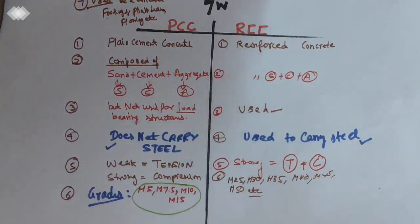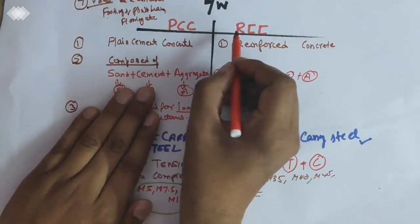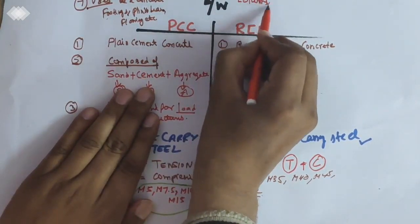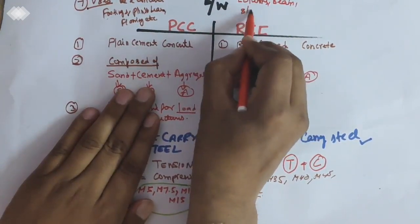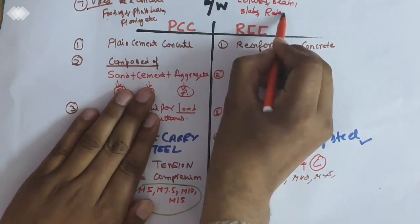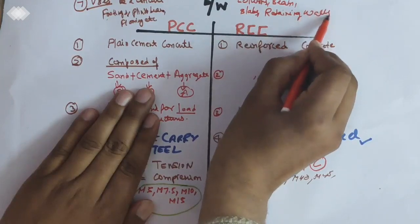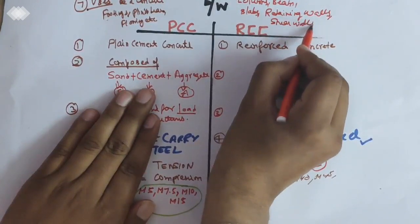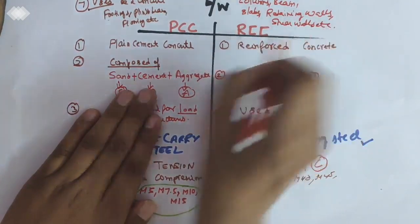While for RCC, it is used for structural members like columns, beams, slabs, retaining walls, shear walls, etc.